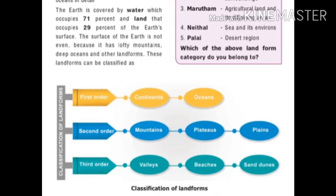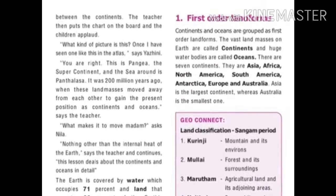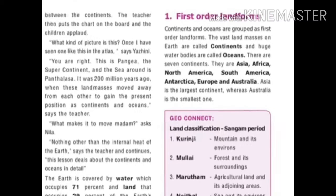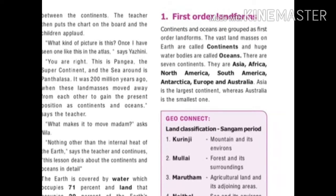2nd order landforms are mountains, plateaus, and plains. 3rd order landforms are valleys, beaches, and sand dunes. Now, with that detail, let's look at the first order landforms — continents and oceans.